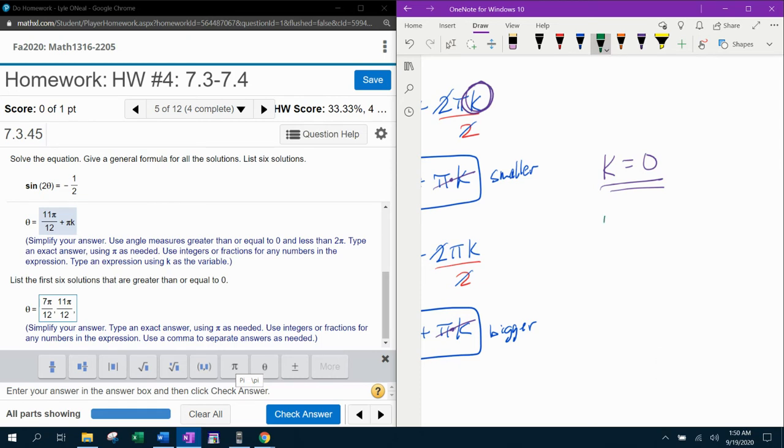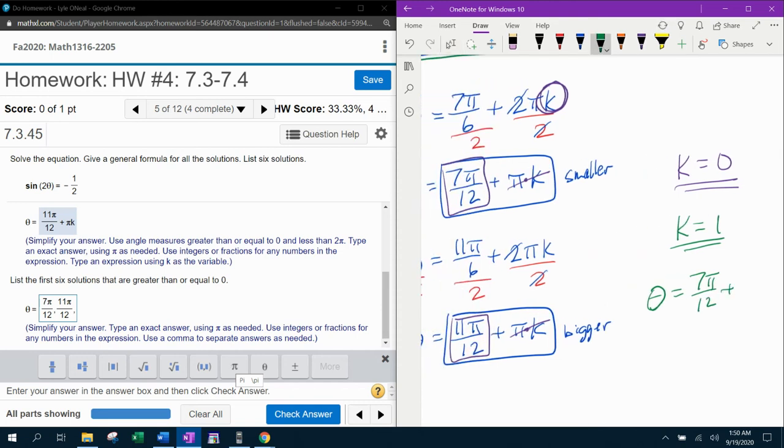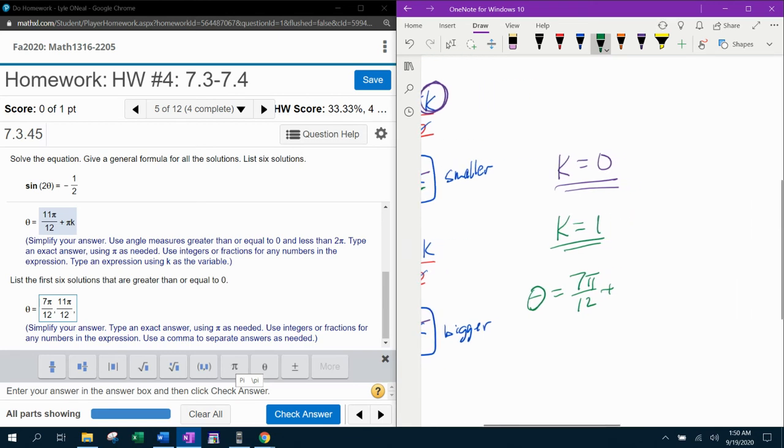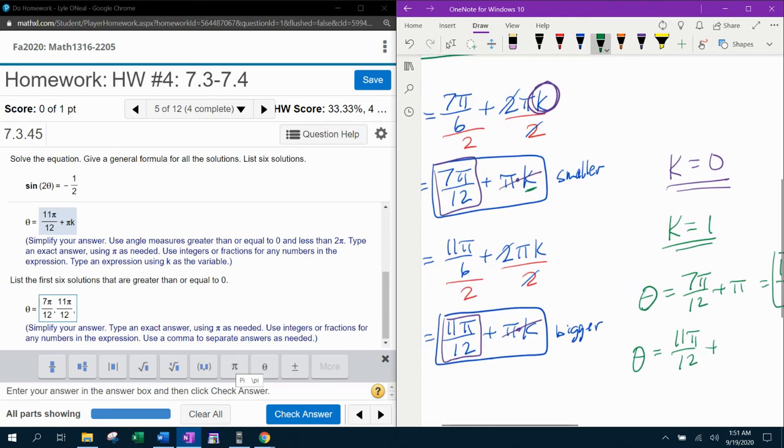And then we're going to do the what if game, and we're going to say, what if k is one? What would our answers be? Well, according to the general formula, the next theta would be 7 pi over 12 plus, again, I'm plugging in one for k. So one times pi would be pi. So whatever 7 pi over 12 plus pi is, will be our next angle. And I'm going to need a common denominator to add those. So that's going to be 7 pi over 12 plus 12 pi over 12. And that's going to be 19 pi over 12.